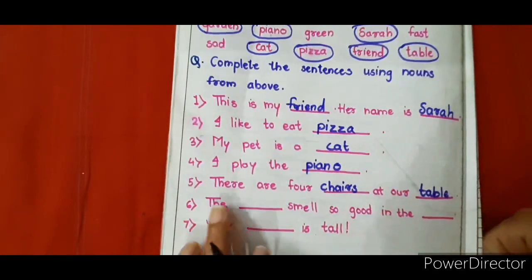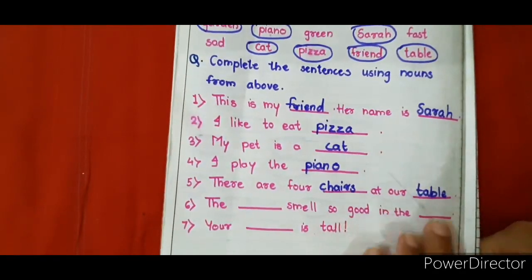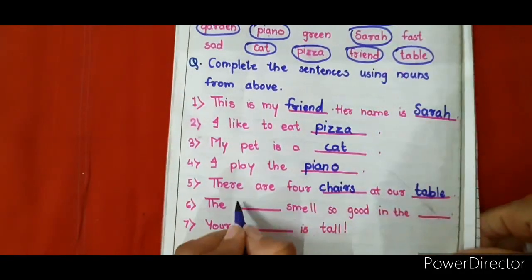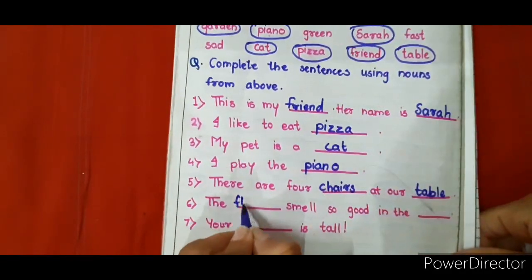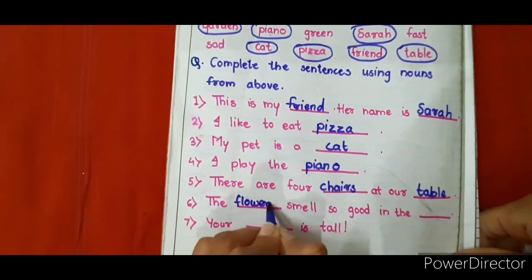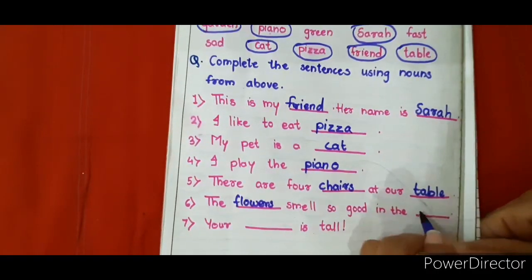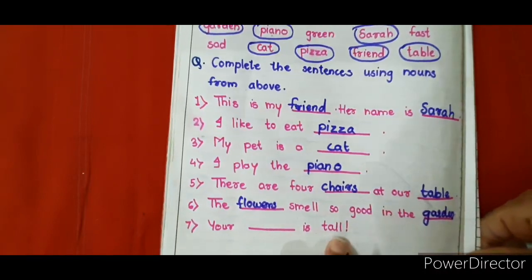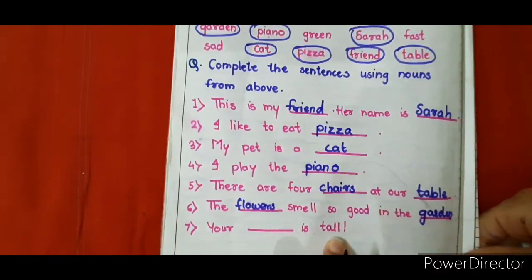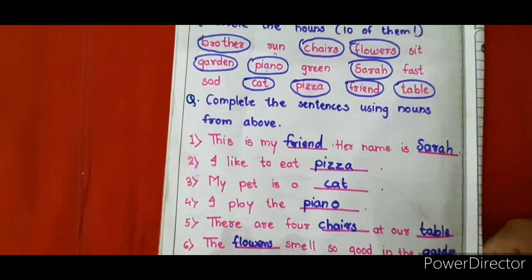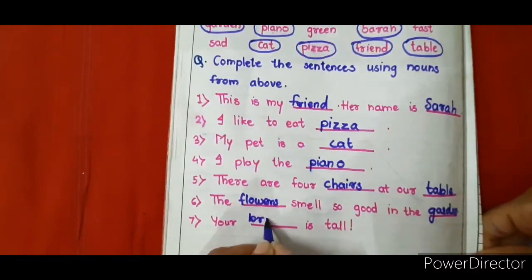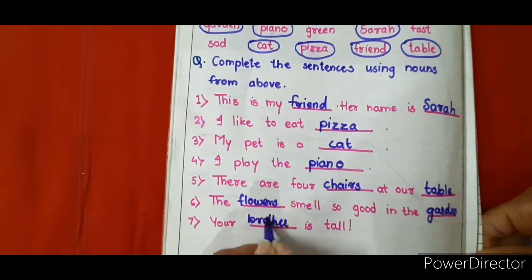Next: The dash smells so good in the dash. You can use flowers — the flowers smell so good in the garden. Your dash is tall — you can use brother: Your brother is tall.